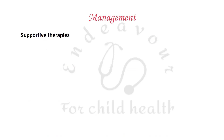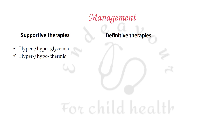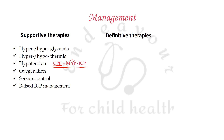Management involves two kinds of therapies: supportive and definitive. Supportive therapy comprises management of hypoglycemia, hyperglycemia, hypothermia, hyperthermia, and hypotension. Cerebral perfusion pressure is given by the formula MAP minus ICP, so we need to maintain mean arterial pressure to continue normal cerebral perfusion. One must also manage oxygenation, seizure control, and raised ICP.